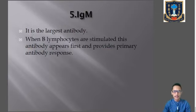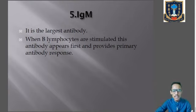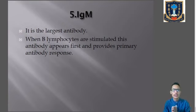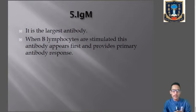The last immunoglobulin is IgM, the largest antibody. IgM is mainly involved in body's initial response. When B lymphocytes are stimulated, IgM appears first and provides the primary antibody response.